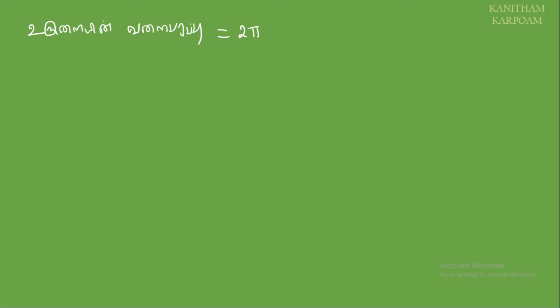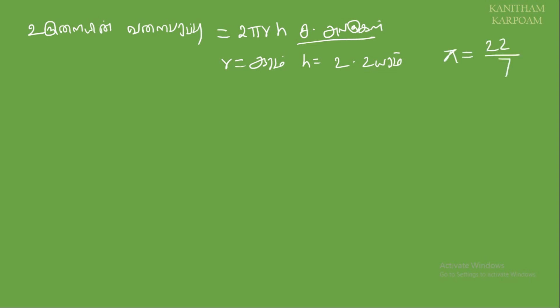So, the number of 2πrh is equal to 2πrh. So, if you get the number of 2πrh, you will see the number of 2πrh. So, if you know the number of rh, then the number of 1. So, if you get the pi value, you will see the number of 22 by 7.